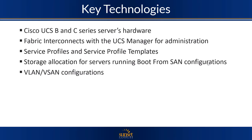We'll also be talking about the difference in managing the B and C series servers. We're going to get into the Fabric Interconnects and utilizing the UCS Manager for administration of the B and C series servers. The things we talk about the most are service profiles and service profile templates — service profiles for hardware identity that we can move from one server to another, and service profile templates that allow us to template one profile and use it many times. We're also going to get into storage allocation for servers, including boot from SAN configurations as well as local RAID configurations. And then one of the last things we discuss is the VLAN and V-SAN — the networking and storage networking configurations.